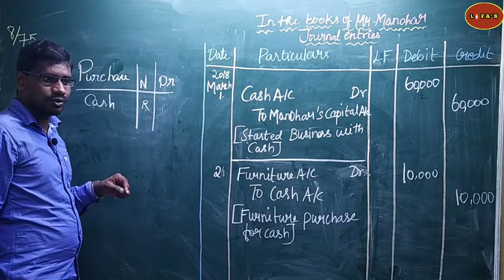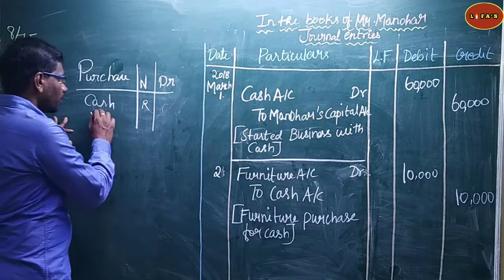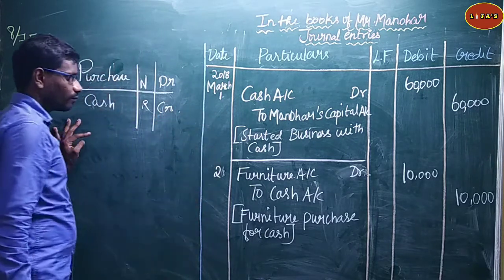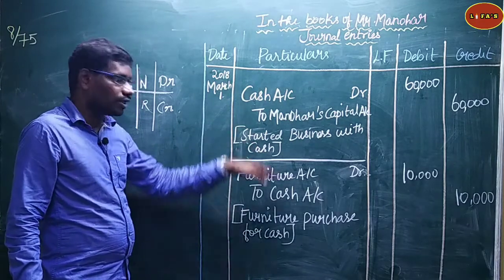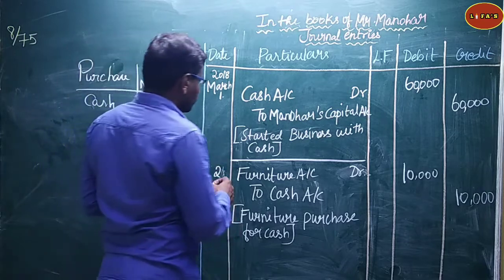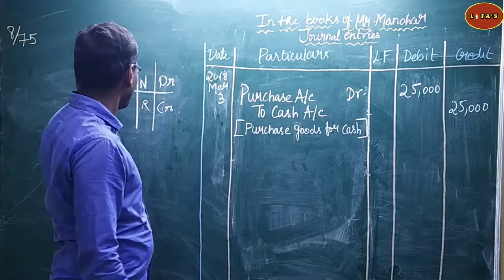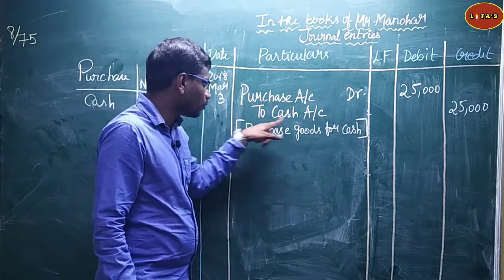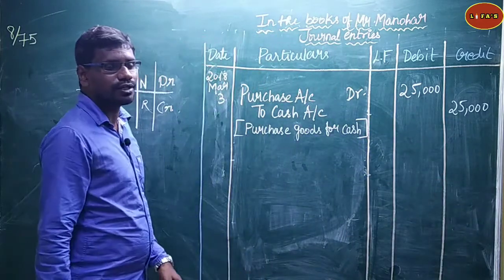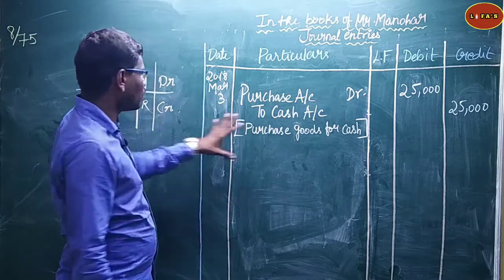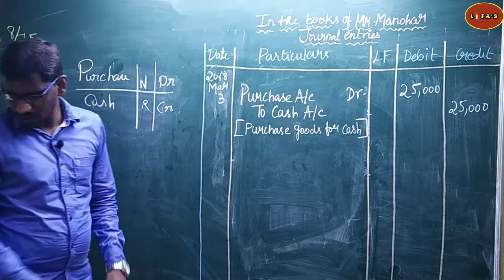So cash goes out, so cash is credited. Journal entry for March 3: Purchase Account Dr. to Cash Account — rupees 25,000 debit, 25,000 credit. Narration: Bought goods for cash.